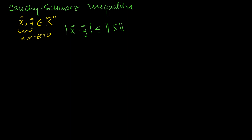So that's the length of vector x, which we defined a couple of videos ago, and this is the length of vector y. Each of these are just regular numbers — they're not vectors once you take a length. The length of a 50-dimensional vector could just be the number 3; it's just a scalar value. So this is just scalar multiplication here.